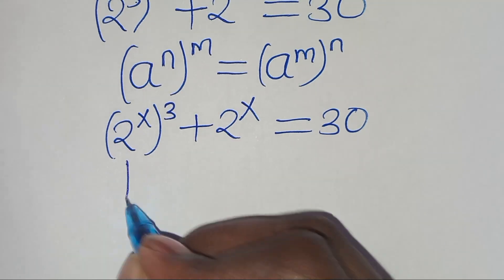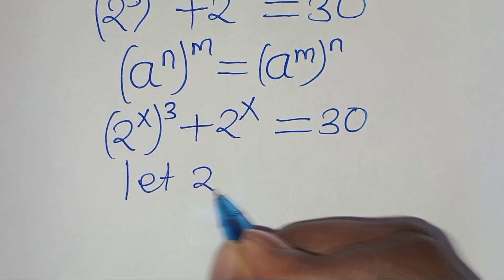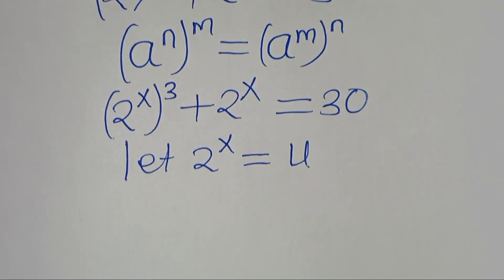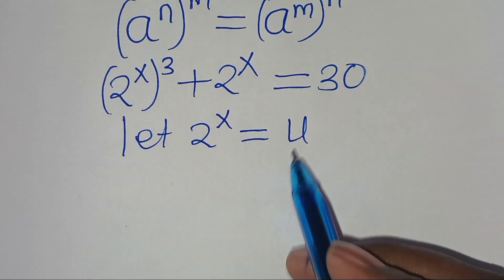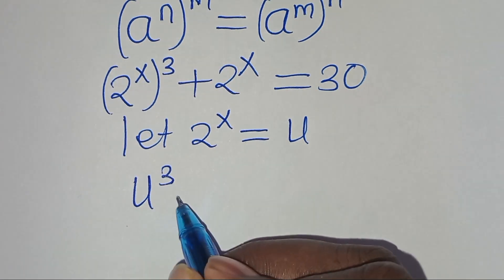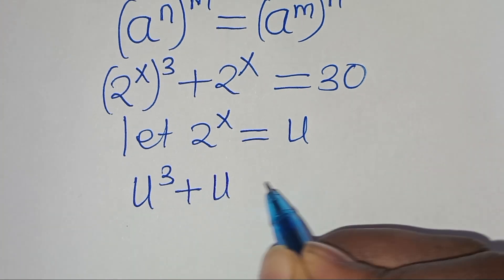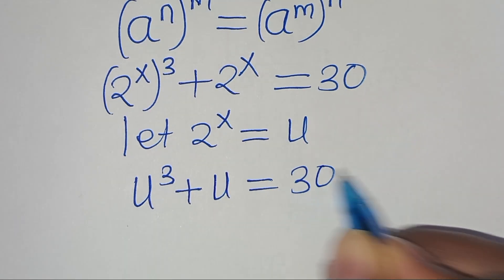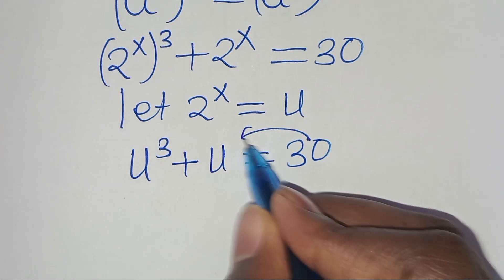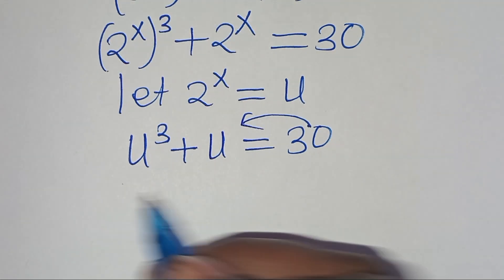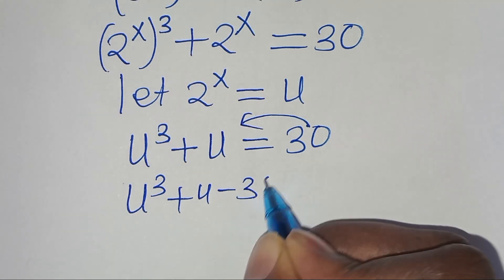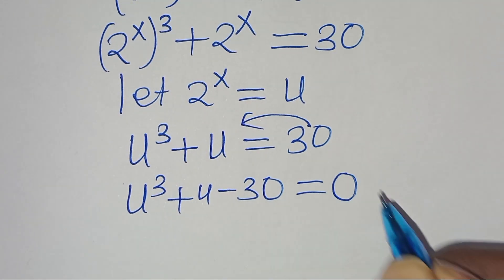From here, let 2 to the power of x be equal to u. Substituting u, we have u to the power of 3 plus u, and this is equal to 30. Let's take 30 to the left-hand side so that we have u to the power of 3 plus u minus 30. This is equal to 0.